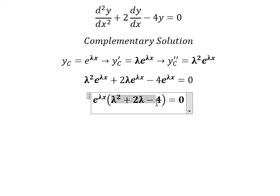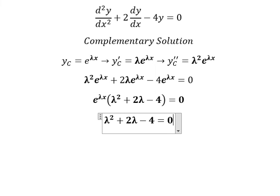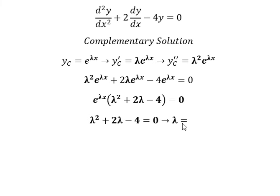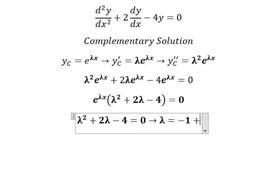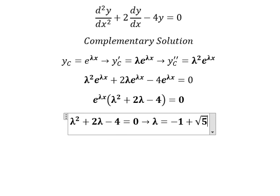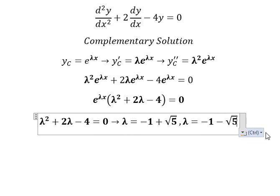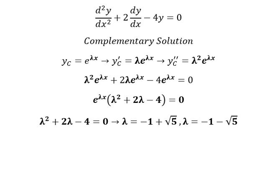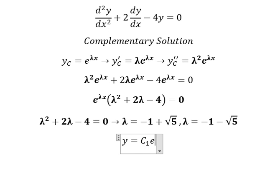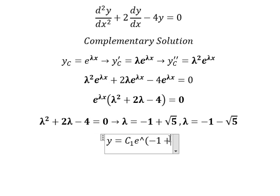We find the solutions: lambda equals negative two, lambda equals negative one plus the square root of five, and lambda equals negative one minus the square root of five. So the final answer is y equals c₁ e to the power of (negative one plus square root of five) times s.